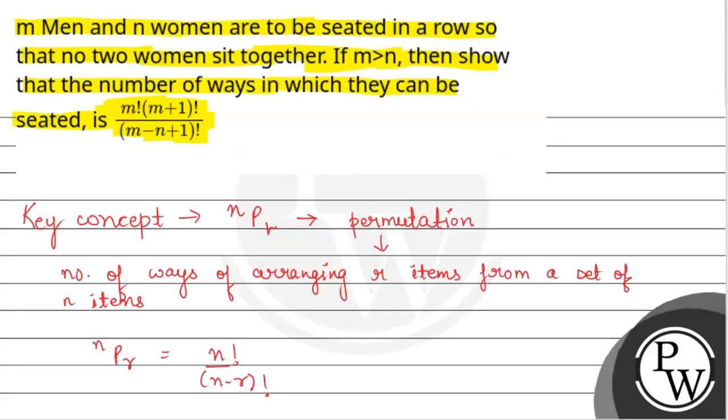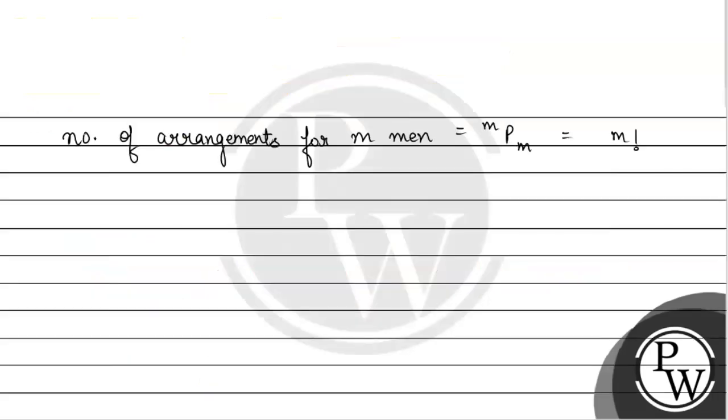Further question में क्या बोला है? बोला है कि women are to be sitting in a row so that no two women sit together.